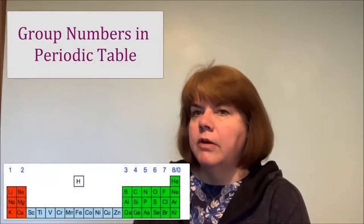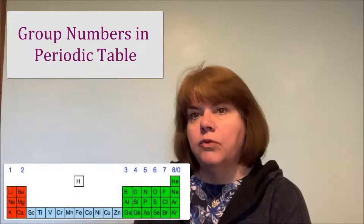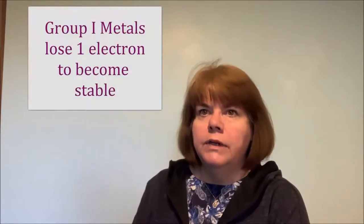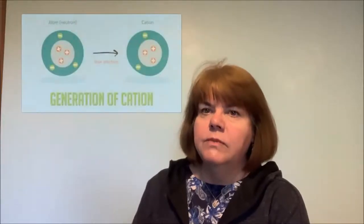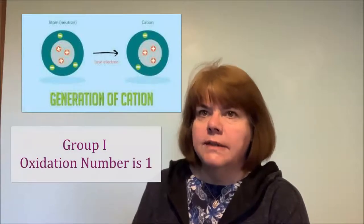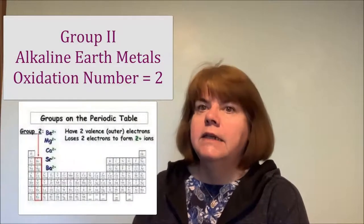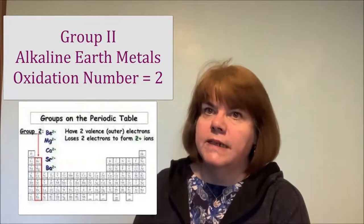If we look at the periodic table, we see group numbers. The group number is linked to the oxidation number for the main groups. For example, group 1 metals lose one electron from their outermost energy level to become stable, so their oxidation number is 1. Group 2 metals, or alkaline earth metals, need to lose two electrons to become stable, so their oxidation number is 2.